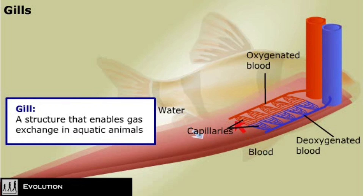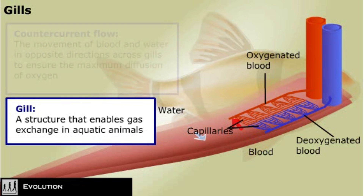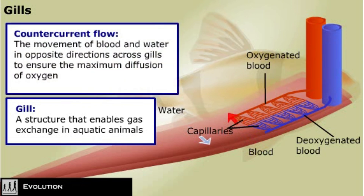Fish take in water through the mouth and force it out over the gills. In fish, blood and oxygen-rich water travel in opposite directions. This countercurrent flow ensures the maximum transfer of oxygen.